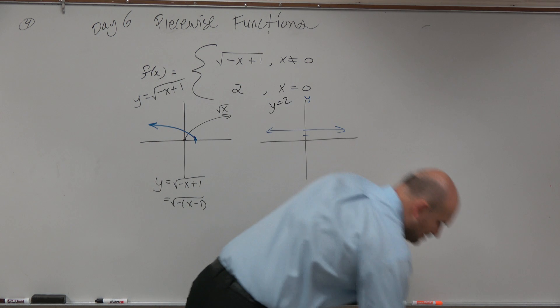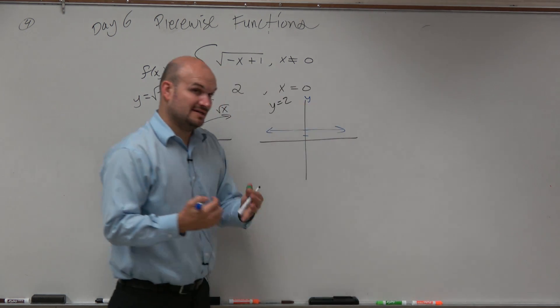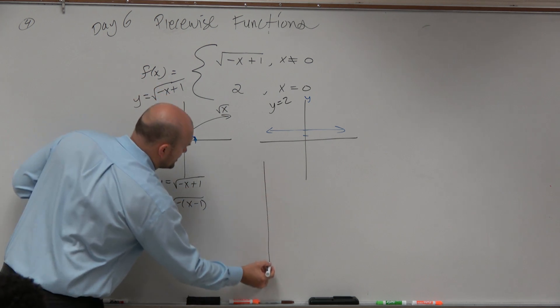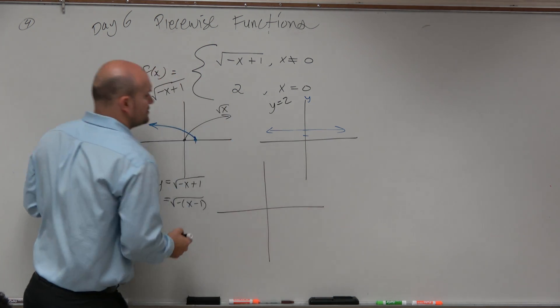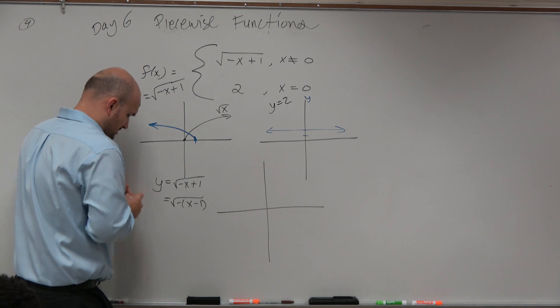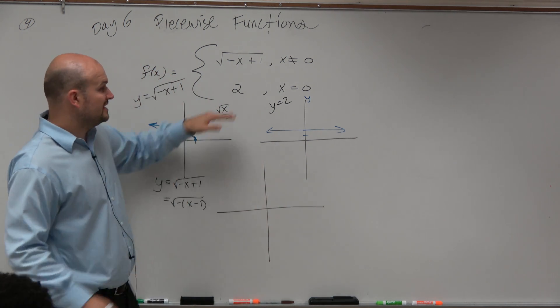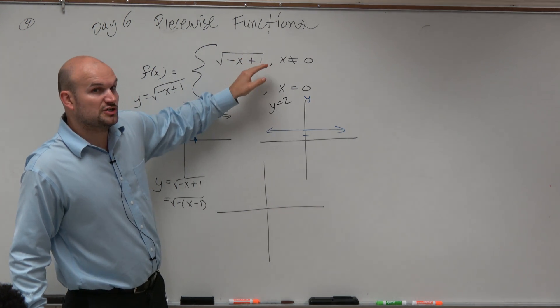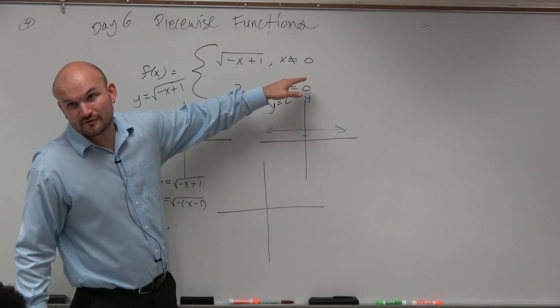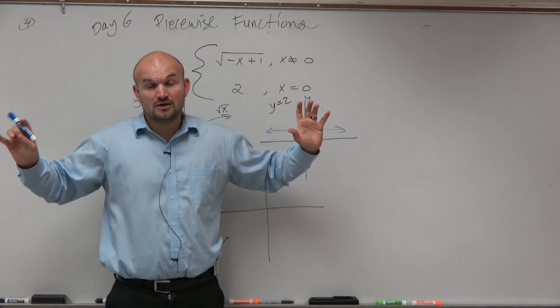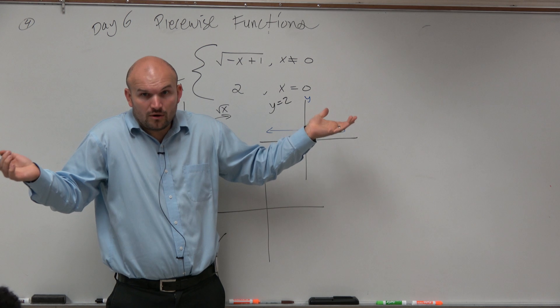But now, to combine these, we've got to go by what their domain is, or what their restriction is. So, let's do this. Now, this says, graph this function. Just don't graph it for 0. Everything else is good. Just don't do 0. So, what should we put at 0, then, for that graph? A hole.